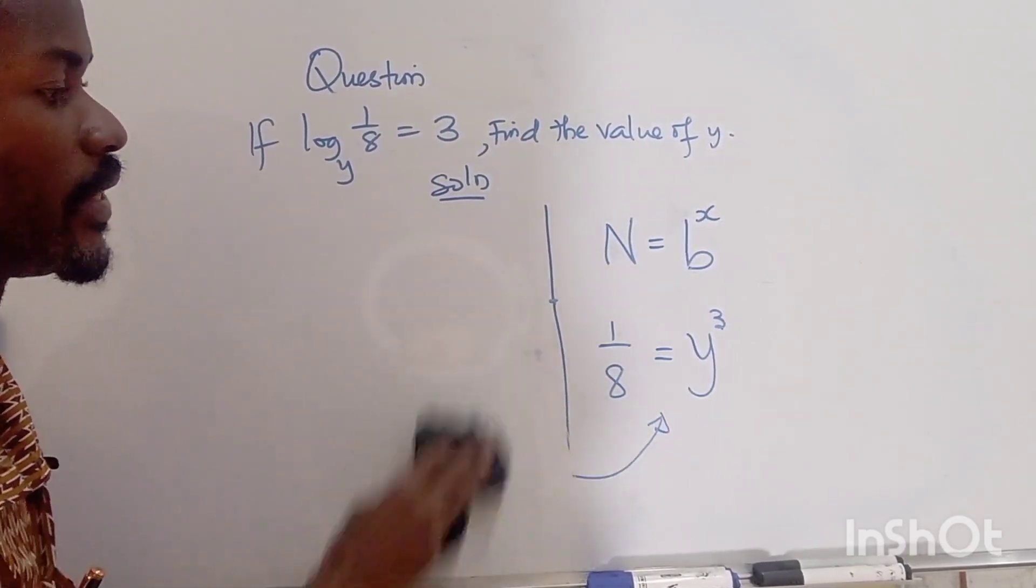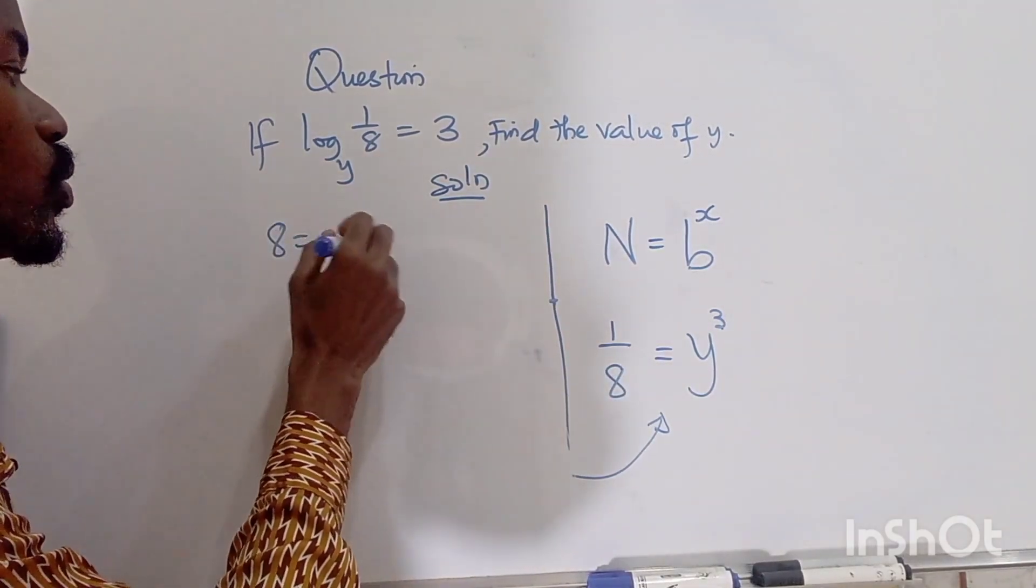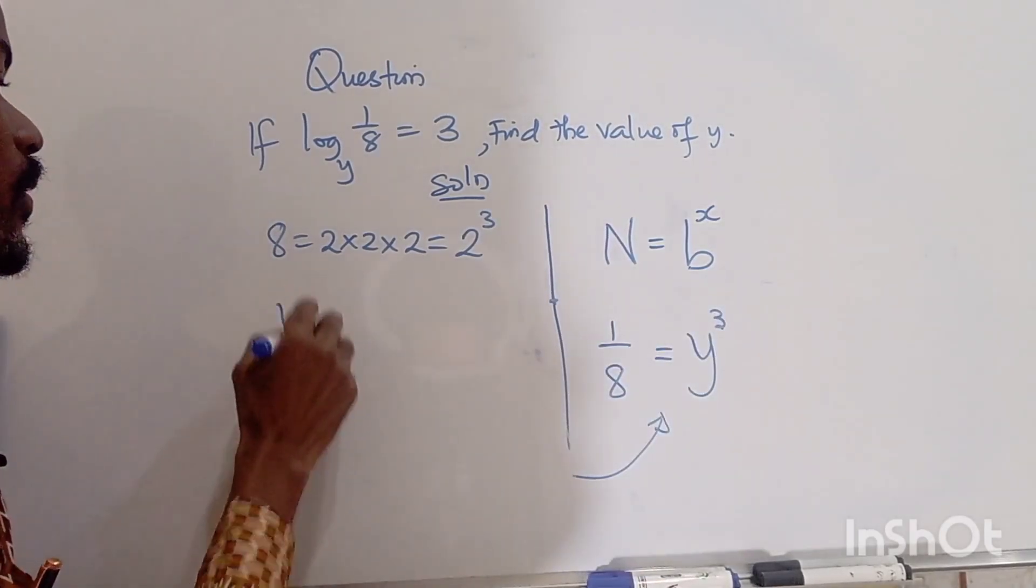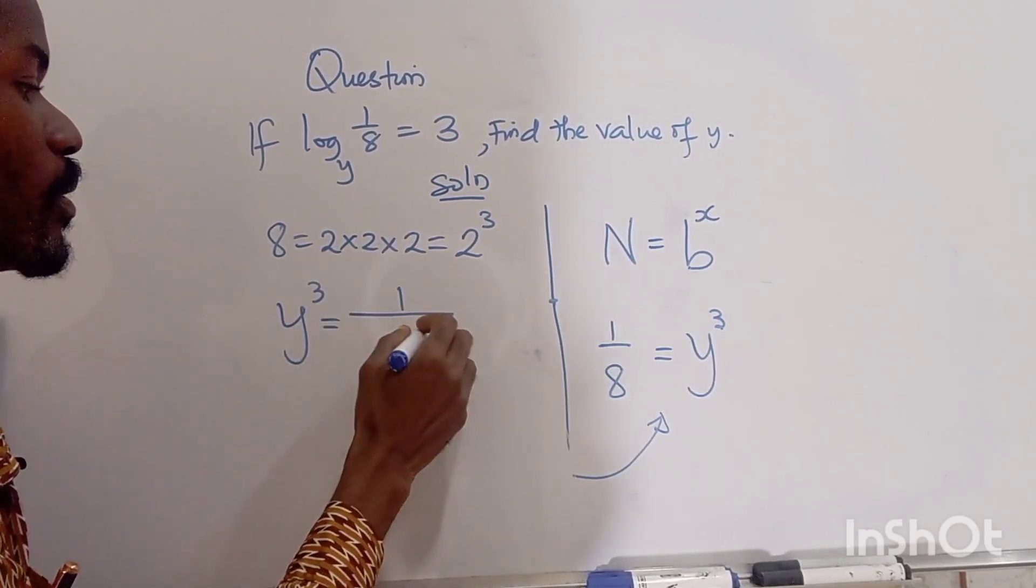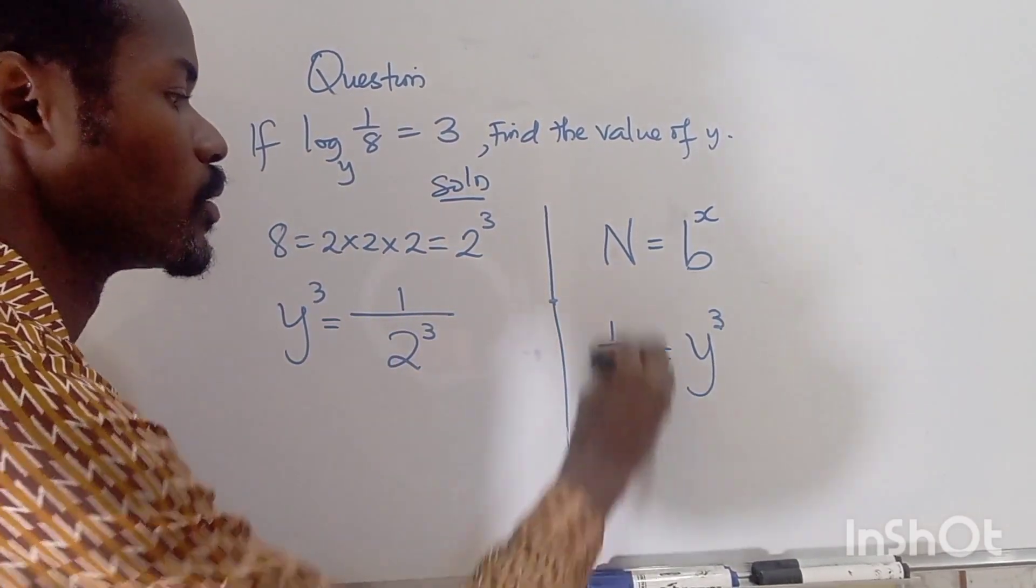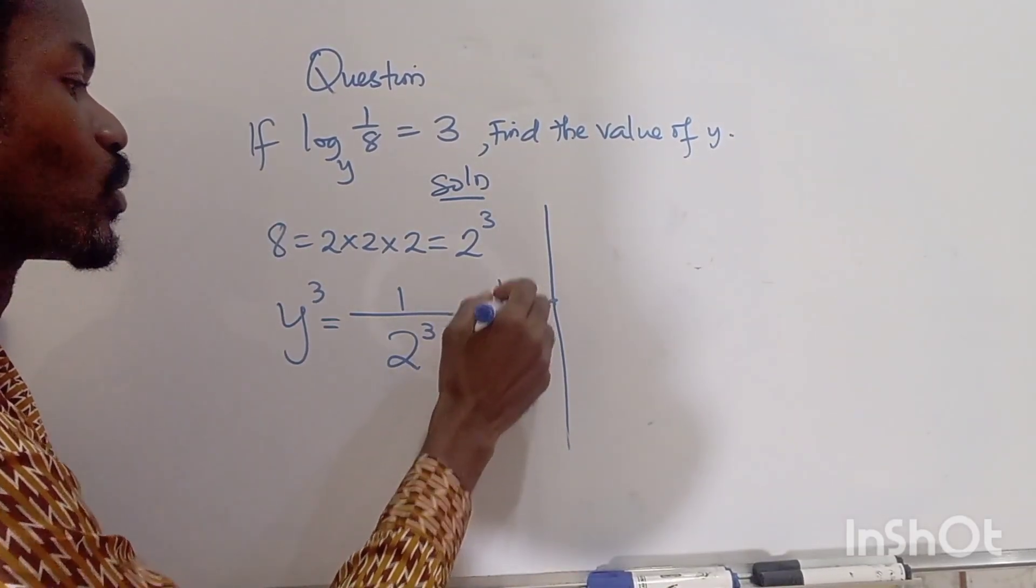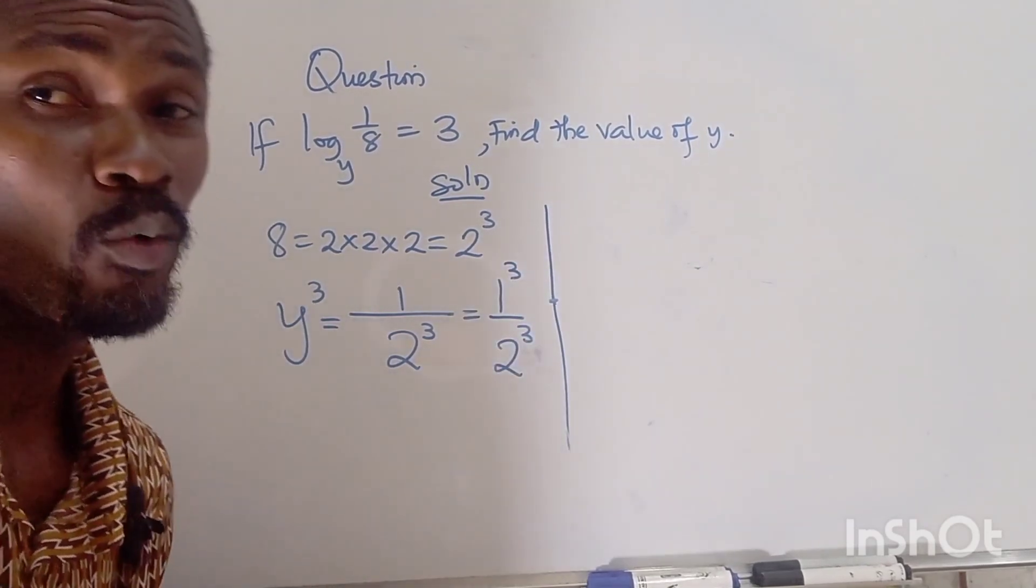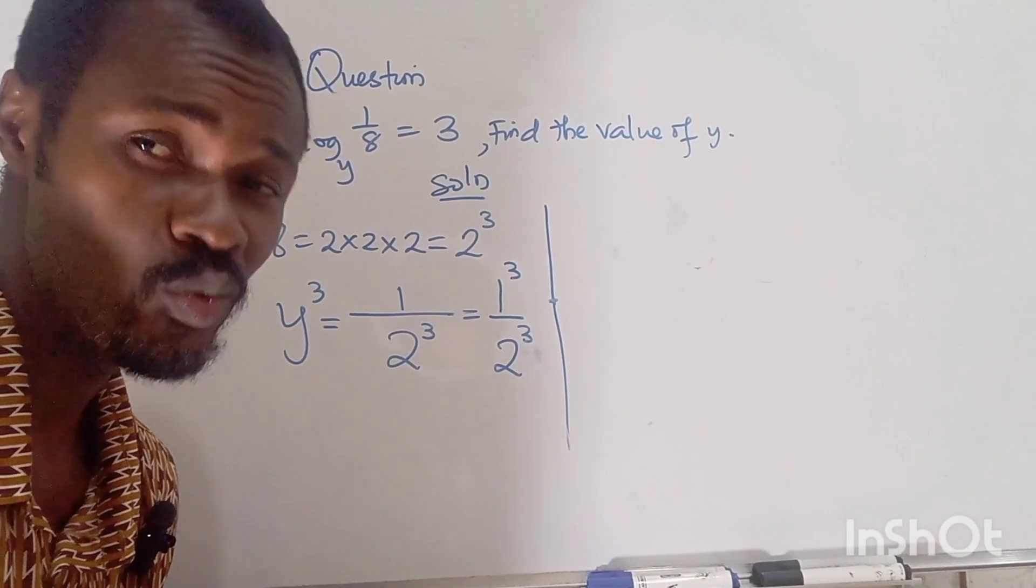So let's see what we have there. Now I can realize that 8 means 2 times 2 times 2, which is 2 raised to the power of 3. So y raised to the power of 3 equals 1 over 2 raised to the power of 3. Now the 1 at the numerator, we can also write as 1 raised to the power of 3 divided by 2 raised to the power of 3. Remember 1 raised to the power of anything is 1.